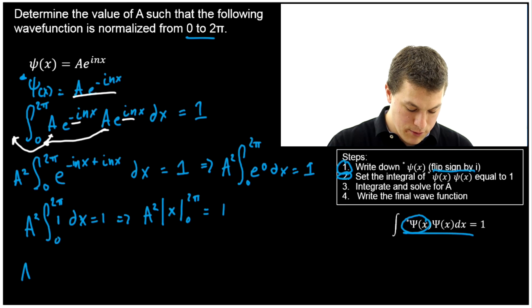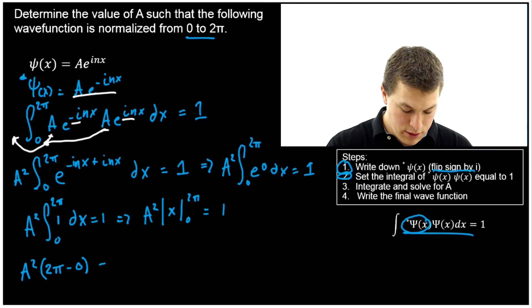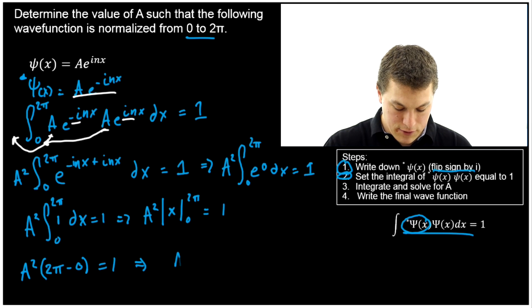And then what we're going to do is we're going to get A² and we're going to go ahead and evaluate. We plug in the top bound minus the bottom bound. Equals one. That means what we're going to get is A² times 2π equals one.